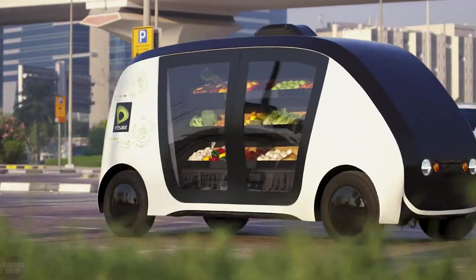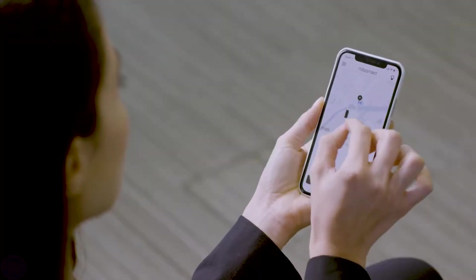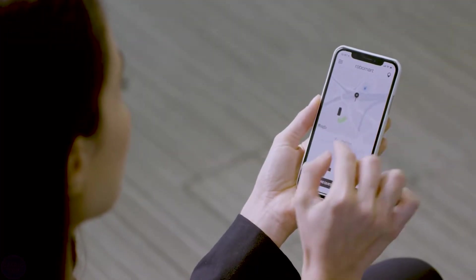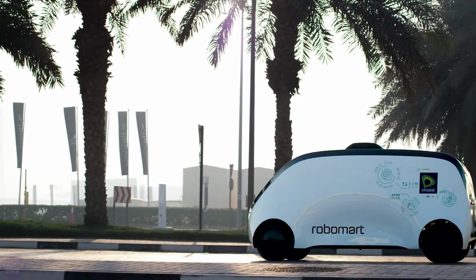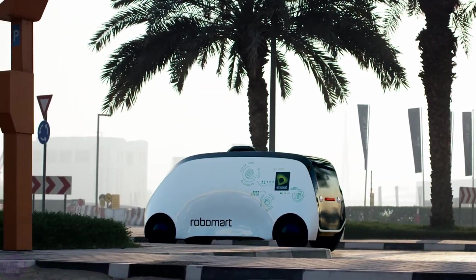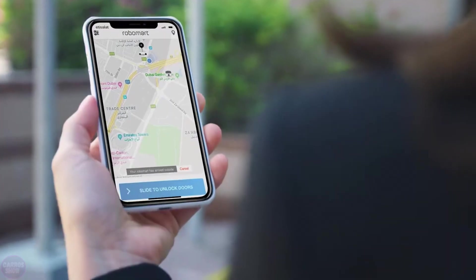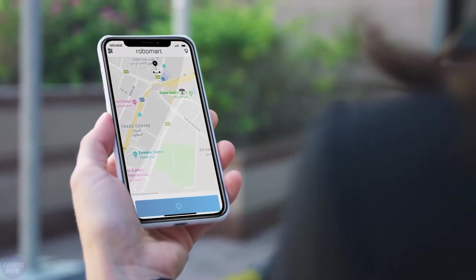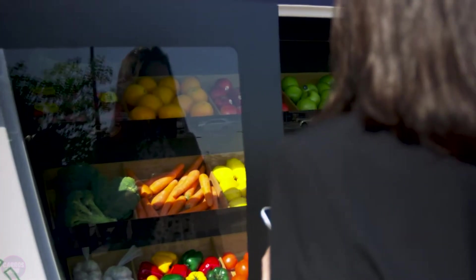Robomart has developed the world's first autonomous grocery store based on an electric vehicle. The creators of Robomart found that around 60% of the products sold are perishable goods, with less than 5% of such products sold in the online segment. The challenge lies in the fact that the delivery of such products is quite expensive, and in addition, customers do not trust someone unfamiliar to choose such products for them, preferring to visit offline stores themselves.